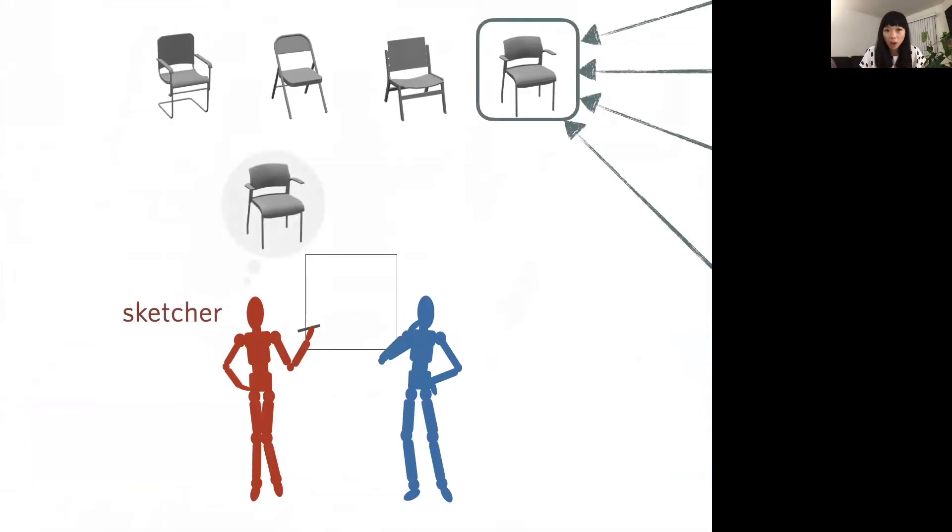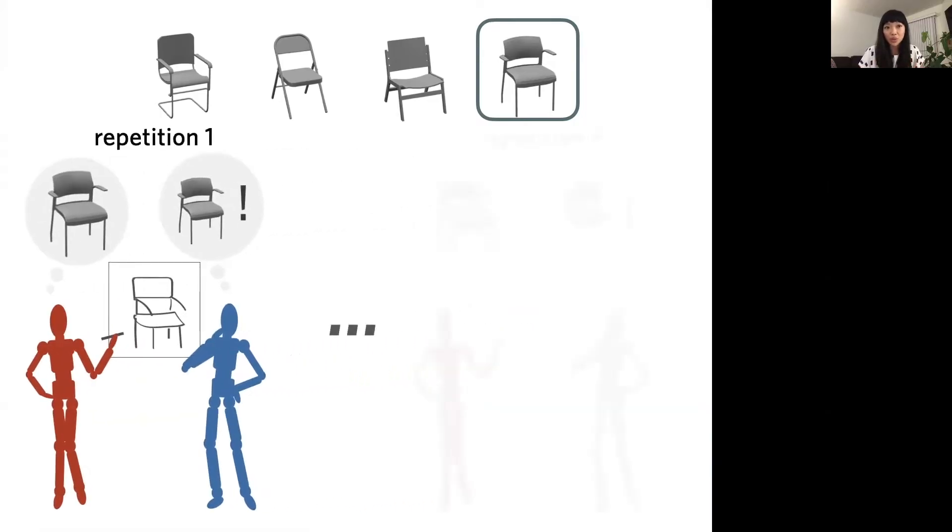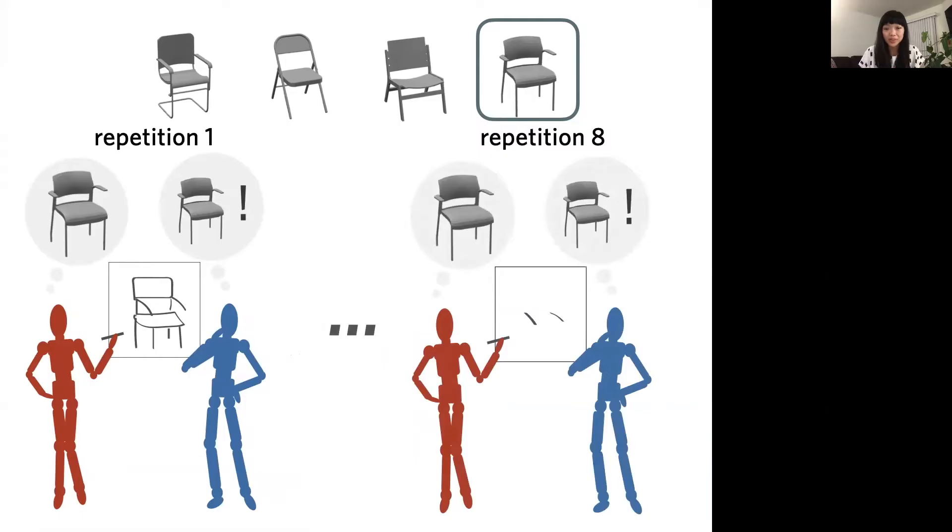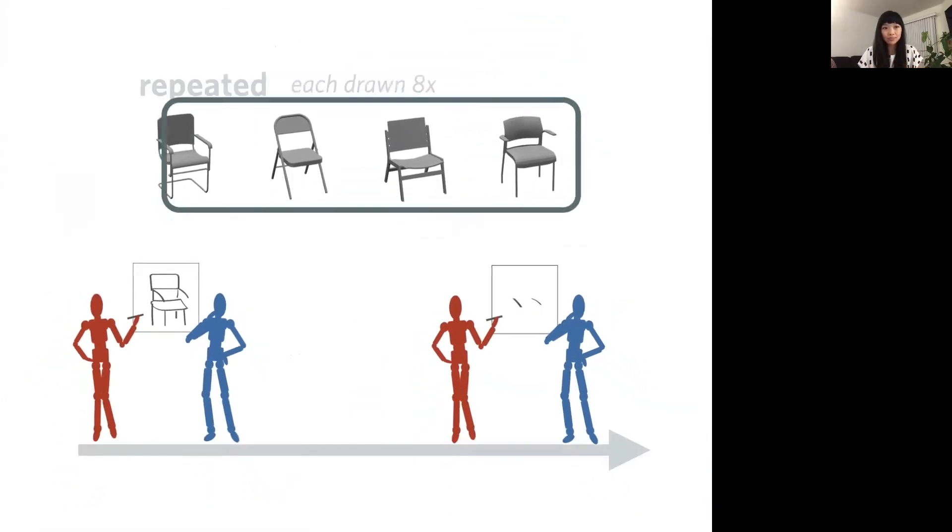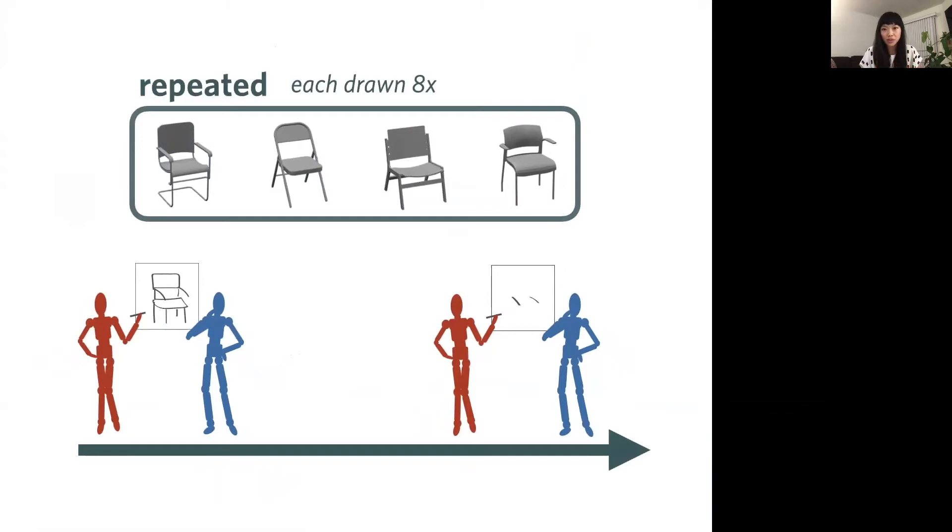On each trial, one of these objects was privately queued for the sketcher, who then had to make a drawing of that target object so that their partner, the viewer, could figure out which of the four objects they'd meant to refer to. So one sketcher drew this. And then once the viewer made their choice, both received feedback. So the sketcher found out which the viewer had picked, the viewer learned which one was actually the target object, and then they moved on to the next trial. And they drew this object not just once, but eight times over the course of their interaction, interleaved among the other three objects in each of eight repetition blocks in which each object appeared as the target one time. And we'll refer to these objects as belonging to the repeated condition.